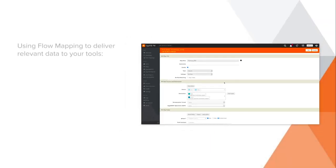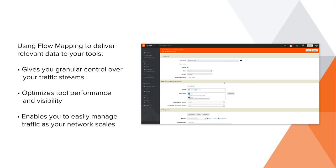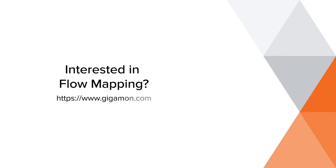Using flow mapping to deliver relevant data to your tools gives you granular control over your traffic streams, optimizes tool performance and visibility, and enables you to easily manage access to traffic as your network scales. Interested in learning more about the flow mapping capability in Gigamon products? Visit www.gigamon.com to schedule an introductory conversation with one of our product experts.